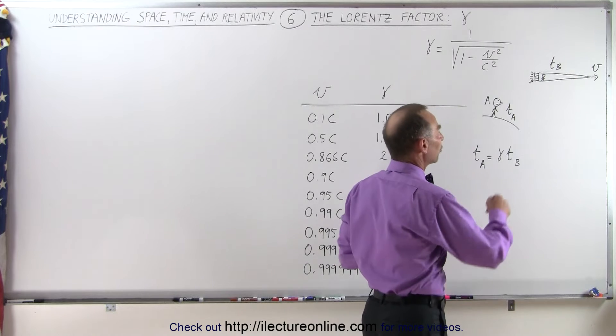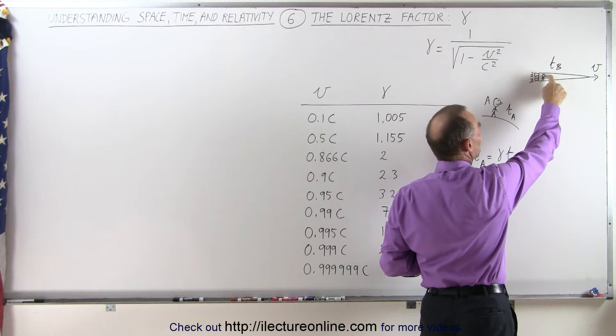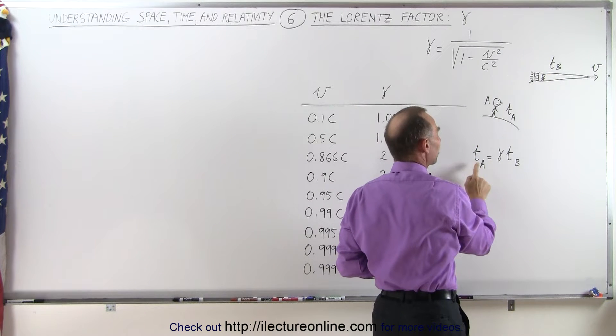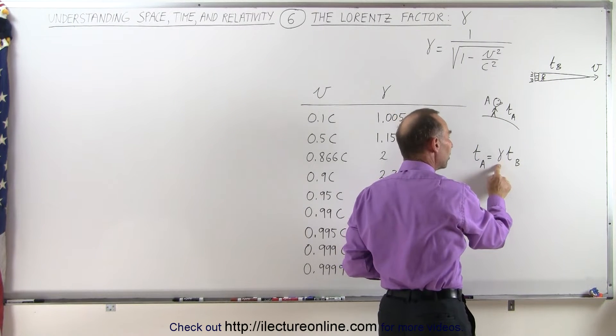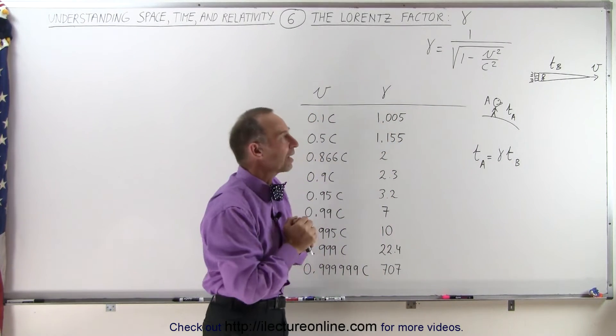If we want to know what the time duration is as measured by observer A relative to what's measured by observer B, we can say that time measured by A equals the factor times the time measured by B. So it all comes down to calculating that factor.